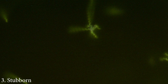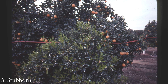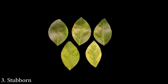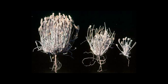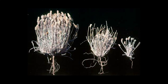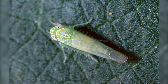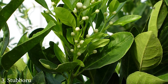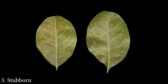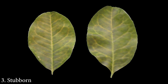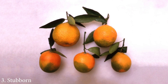Citrus stubborn disease is a bacterial citrus disease that exists in California and parts of the Central Valley and elsewhere. Stubborn is transmitted to citrus from other plant species by leafhopper insects and can be further spread by human grafting of infected citrus budwood. The disease causes symptoms similar to but less severe than HLB.